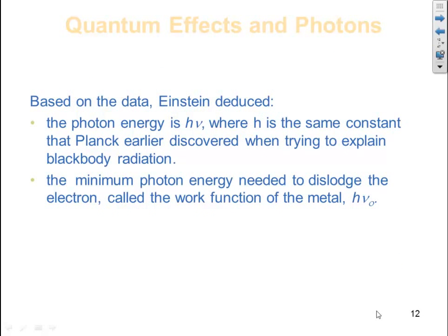Based on the data, Einstein deduced the following. The photon energy is equivalent to Planck's constant times nu, the frequency, where h is the same constant that Planck earlier discovered when he was trying to explain blackbody radiation.